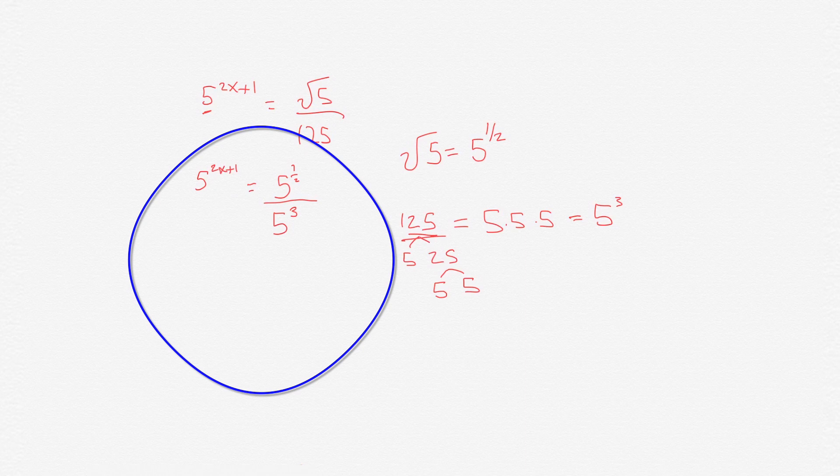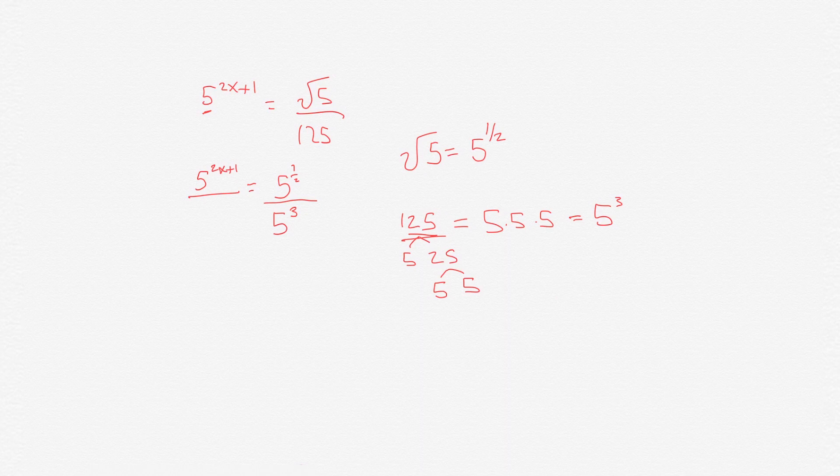What I did to solve this is the following. This number on the left, we can keep it as is, so we have 5 to the 2x plus 1 equals...